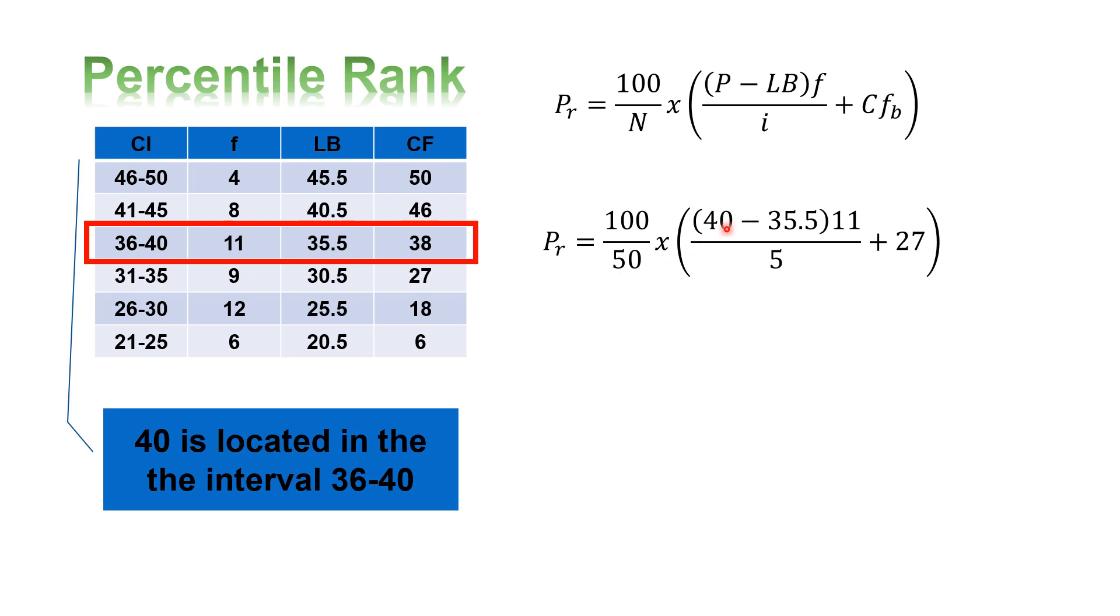The raw score of interest is 40, minus the lower boundary of 35.5, times the frequency 11, divided by 5, plus 27. We'll use the cumulative frequency below of 27.